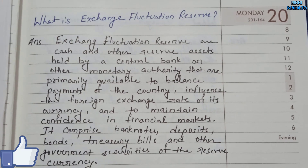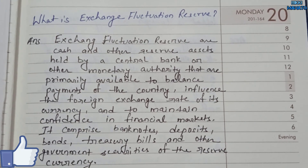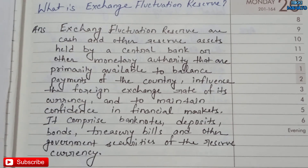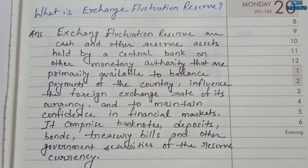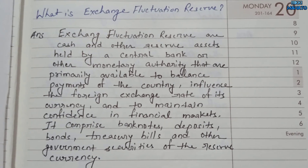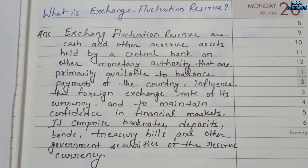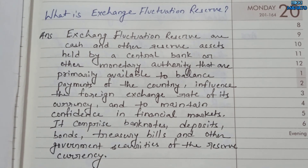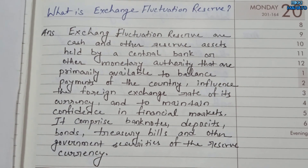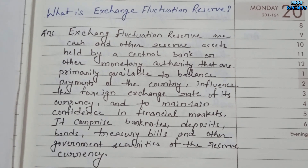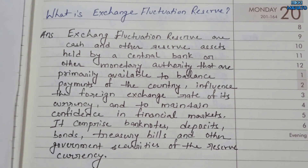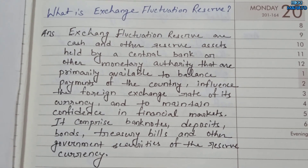Hi, today's topic is exchange fluctuation reserve. Exchange fluctuation reserves are cash and other reserve assets held by a central bank or other monetary authority that are primarily available to balance payments of the country, influence the foreign exchange rate of its currency, and to maintain confidence in financial markets.